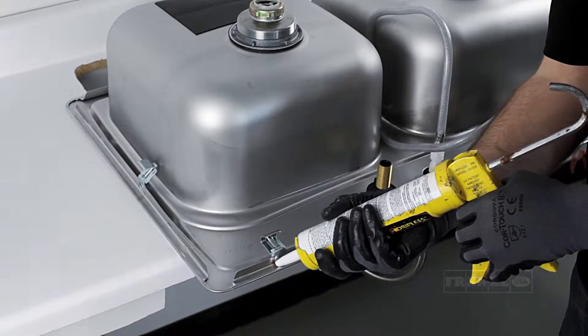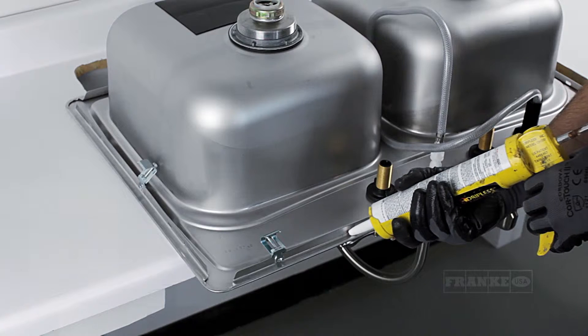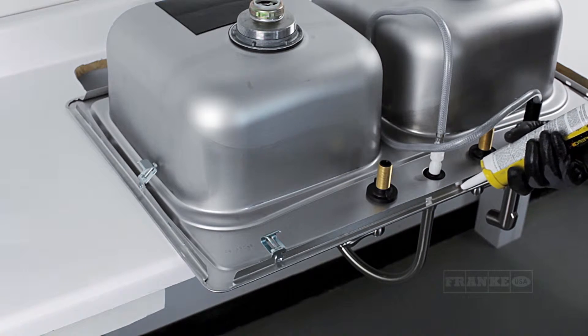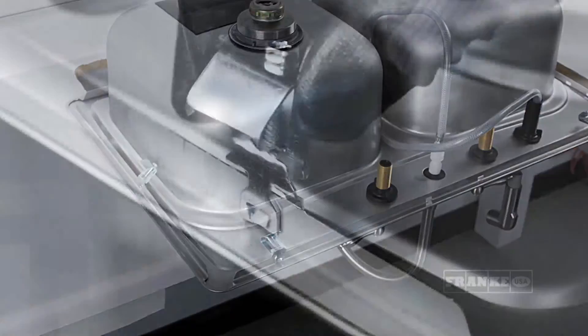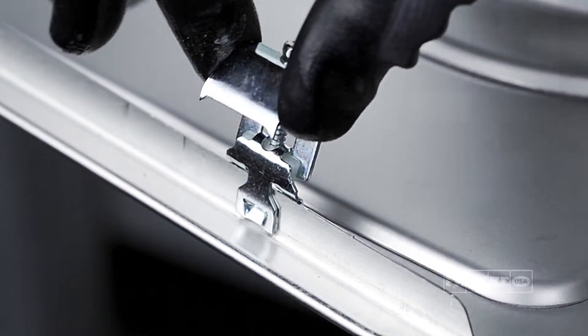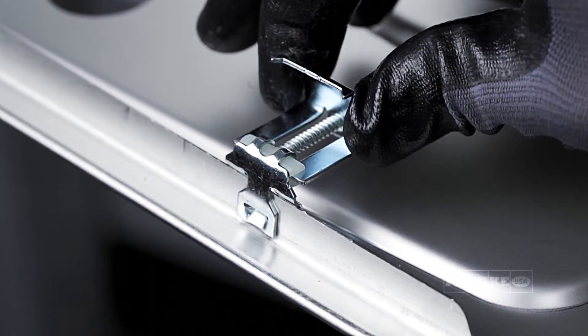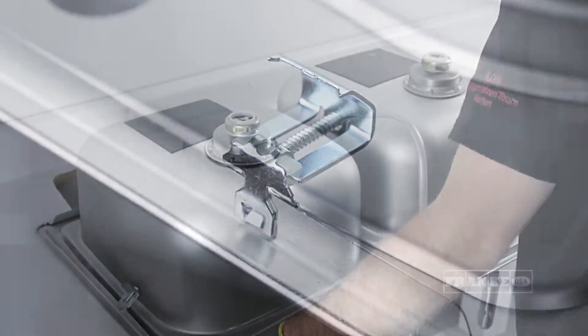With the sink in the upside-down position, place a continuous and generous bead of silicone sealant or plumber's putty around the entire perimeter of the rim to create a watertight seal. Now, position the sink clips back in order to prepare to insert the sink into the countertop.